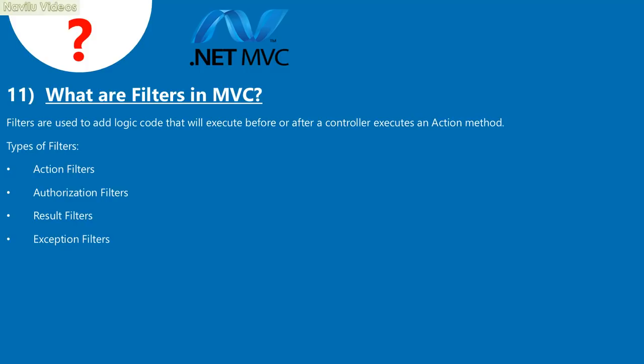Question 11: What are filters in MVC? Filters are used to add logic code that will execute before or after a controller executes an action method. Types of filters: action filters, authorization filters, result filters, and exception filters.